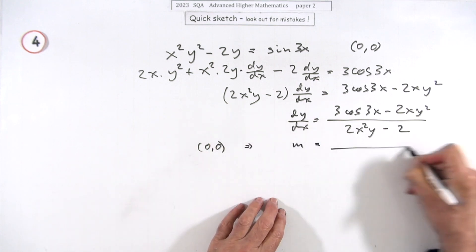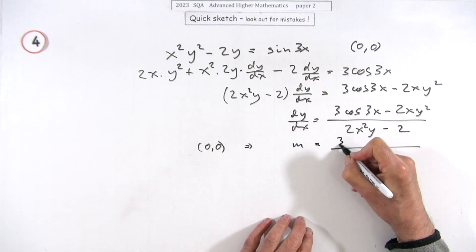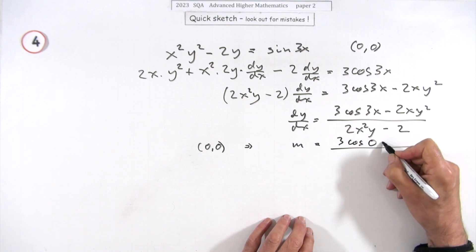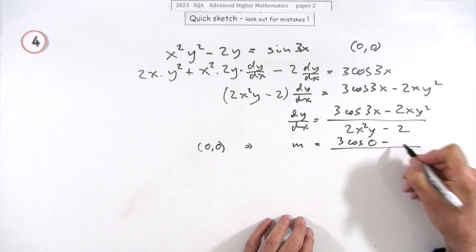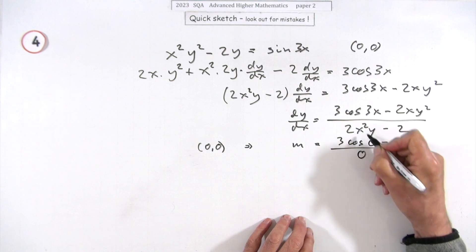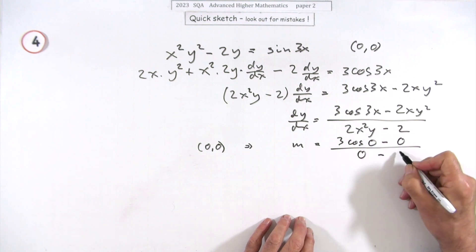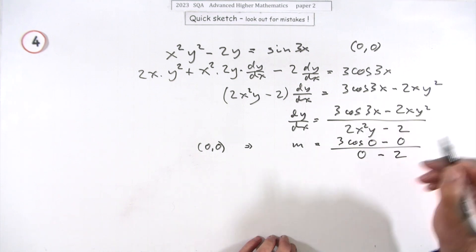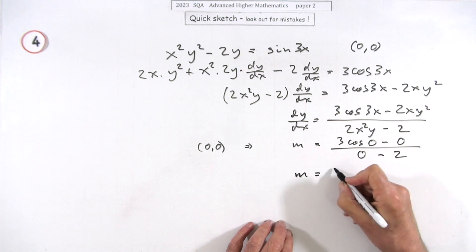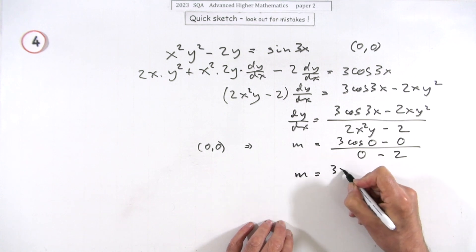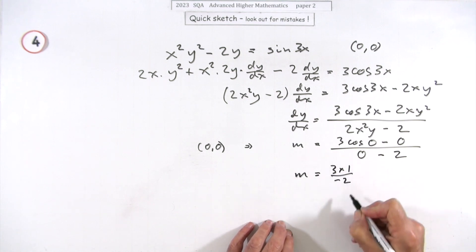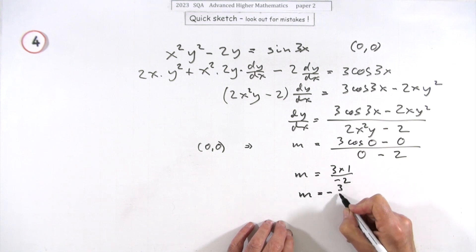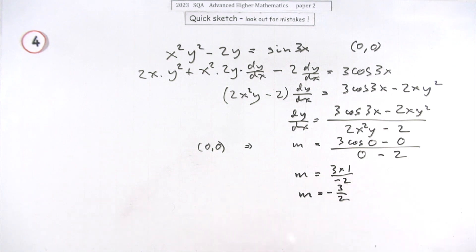At the point (0, 0), substituting zeros in everywhere: the numerator becomes 3cos(0) minus 0, and the denominator becomes 0 minus 2. Since cos(0) = 1, the gradient is 3 times 1 over negative 2, giving a gradient of negative 3/2.